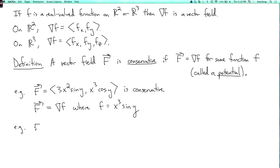Now another example is the vector field F equals (x³ sin y, y²). Is this conservative? Can you find a potential for it? Well, if you try, you're going to have a lot of difficulty because it's impossible. So this vector field is actually not conservative. I'm going to show you a procedure for either finding a potential if it exists or getting a contradiction to see that a potential can't exist.